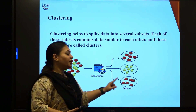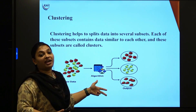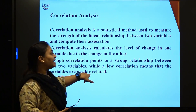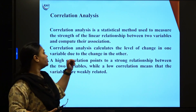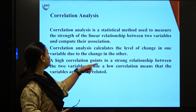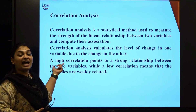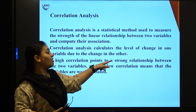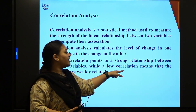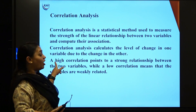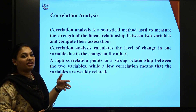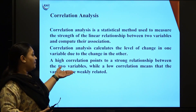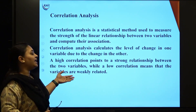Taking the cluster example with apples, pears, and strawberries — I have different types of variables and I use a statistical method to know the relationship among them and their association. Correlation analysis calculates the level of change in one variable due to the change in the other. A high correlation points to a strong relationship between two variables, while a low correlation means the variables are weakly related.